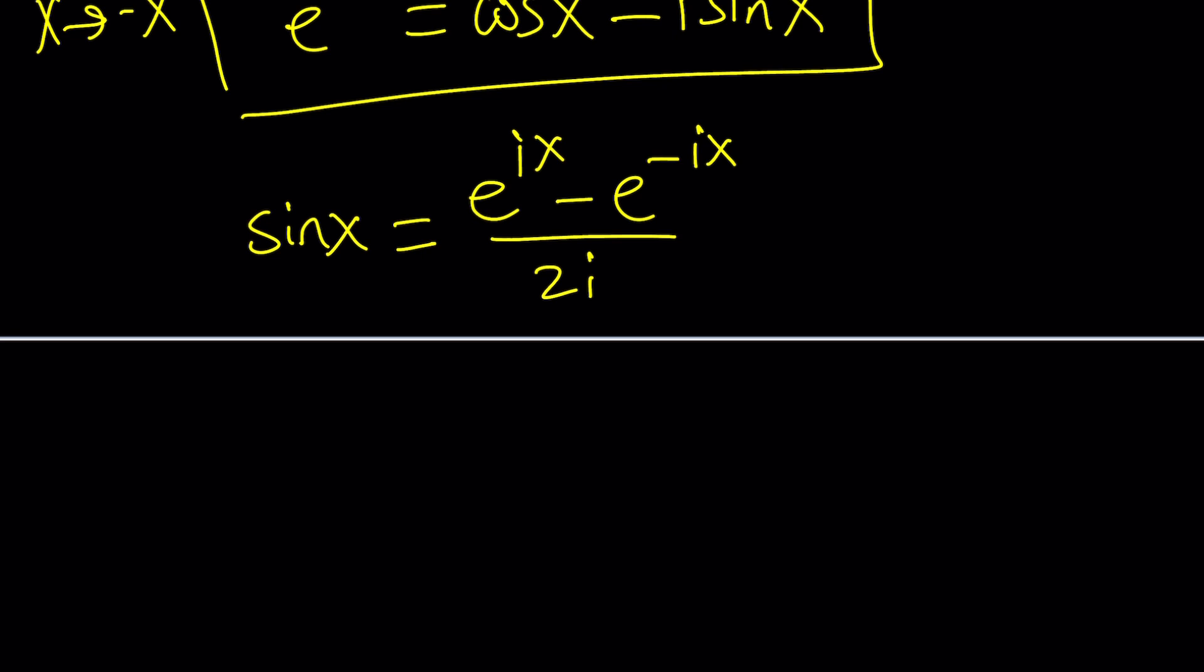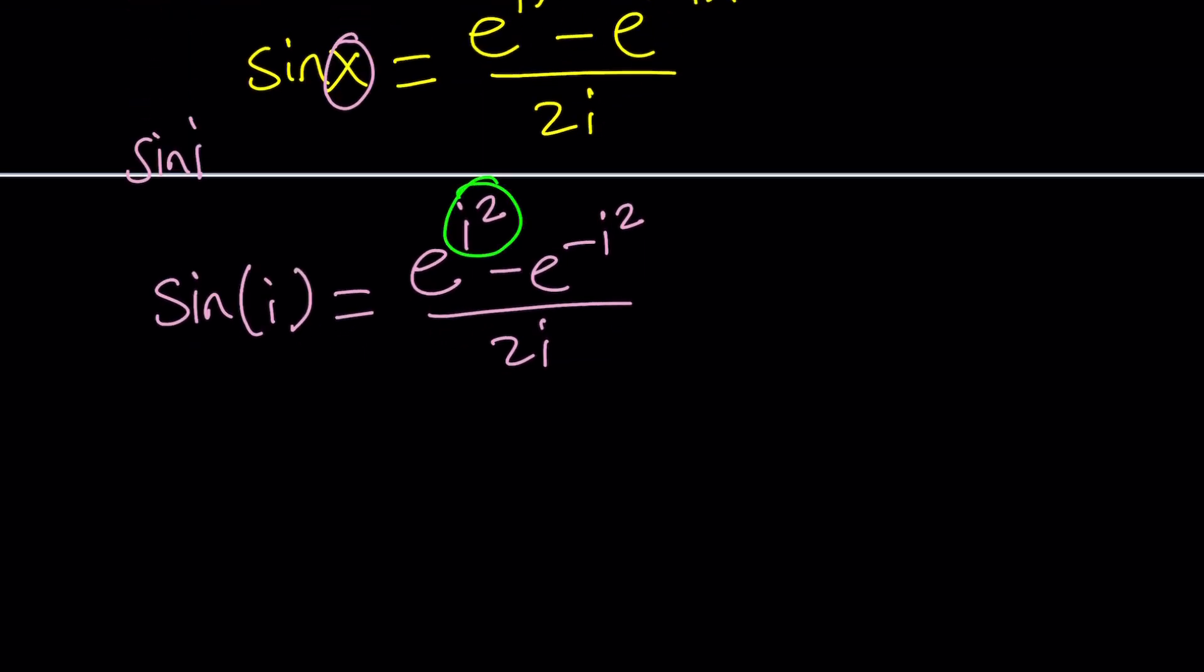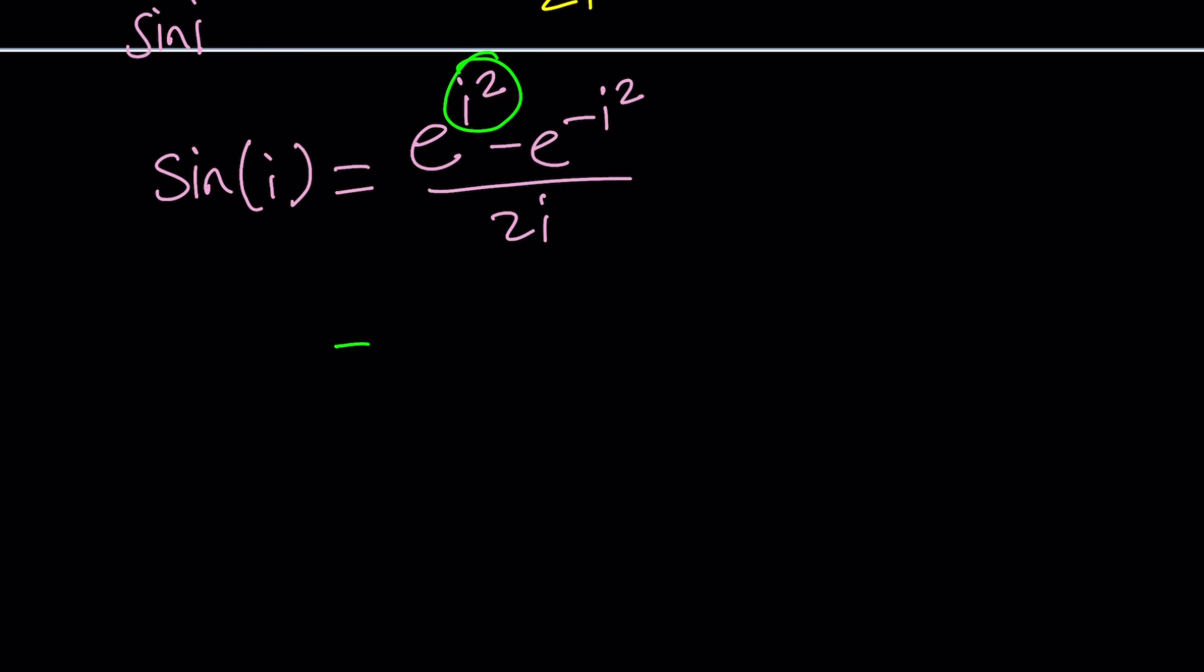So let's go ahead and replace x with i. That's going to give us sine of i. I'm going to use parentheses so it doesn't look like sin i, which kind of explains the title, right? Have you looked at it? Anyways, so this is going to give us, if you replace x with i, e to the i squared minus e to the negative i squared divided by 2i. And we can kind of simplify this a little bit. i squared is negative 1, don't forget that.